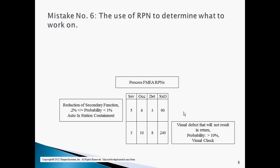The second line of the process FMEA indicates a severity of 3, meaning the process will create an out-of-spec condition resulting in an appearance issue that the customer does not find to be a returnable issue. The occurrence rating of 10 means the out-of-spec condition will be present in 10% or more of the product. The detection rating of 8 means the out-of-spec condition will be inspected for visually. If you worked on the line items with the highest RPN number, you would work on line number 2 with an RPN of 240. However, since the product will not be returned for the appearance issue, this costs the company no money. The line with an RPN of 90 will actually cost the company considerable funds, since up to 1% of the product will have to be either reworked or rejected.